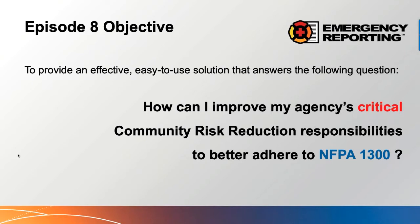So how can I improve my agency's critical community risk reduction responsibilities and better adhere to NFPA 1300? What we're going to do is go over just some key parts of NFPA 1300, and then jump into the Emergency Reporting system so I can show you ways that you can specifically cite in NFPA 1300 what you're doing within your records management system.